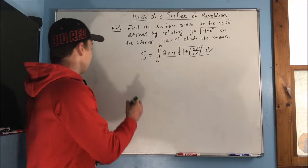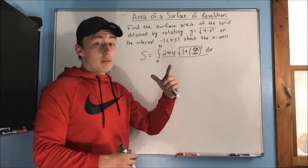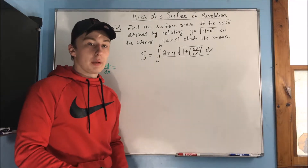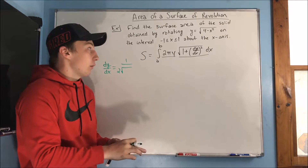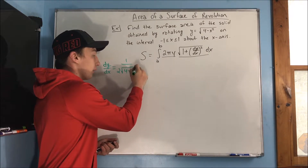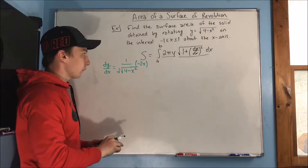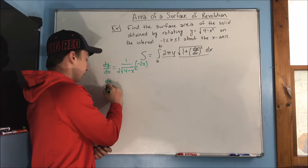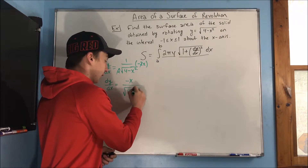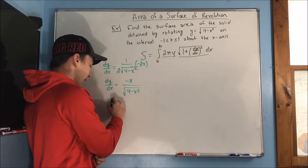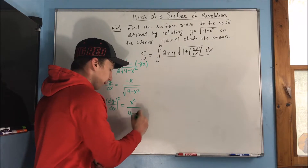To find dy/dx, think of y as the square root of u where u equals 4 minus x squared. The derivative is 1 over (2 times the square root of 4 minus x squared), multiplied by the derivative of the inside, which is negative 2x. The twos cancel, giving dy/dx equals negative x over the square root of (4 minus x squared). Squaring both sides gives (dy/dx)² equals x² over (4 minus x²).